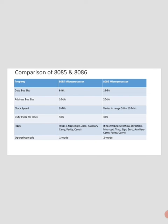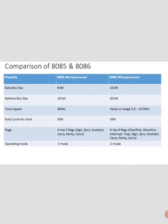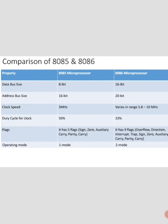Now we will see the comparison between the 8085 and the 8086. The first point is data bus size: the 8085 is an 8-bit microprocessor, while the 8086 is a 16-bit microprocessor. The second point is address bus size: the 8085 has a 16-bit address bus and can therefore access 64 KB of memory, while the 8086 has a 20-bit address bus and can access 1 MB of memory.